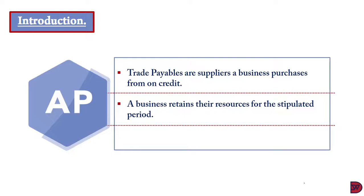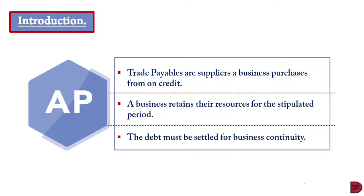Because purchases are bought on credit, the money owed can be used for other business activities until the arranged payment time elapses. With trade receivables, the resources are with customers. The debts must be settled on time for business continuity, because businesses mostly deal on credit — not because they lack funds, but for convenience. Most businesses have bureaucracy and raise purchase orders as discussed in our video on business documentation.